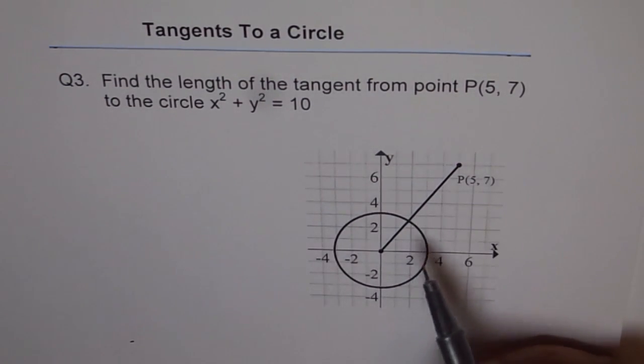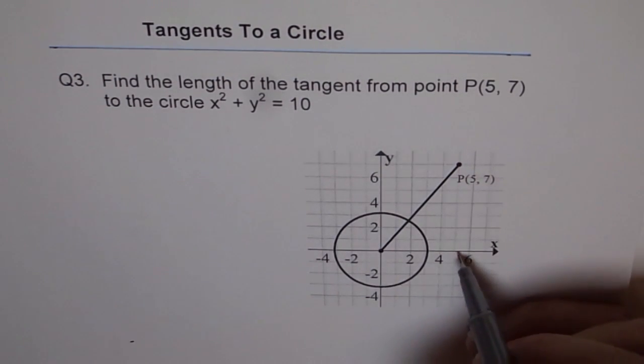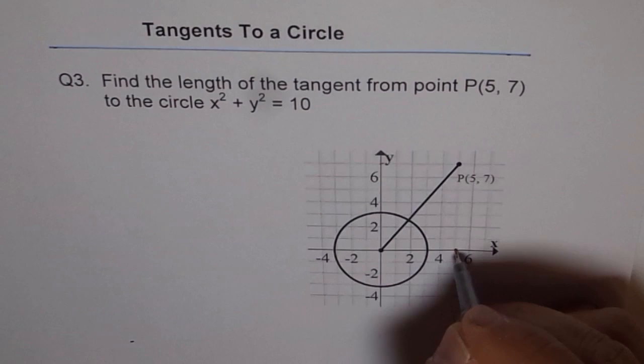And what do we need to do? We need to find the length of tangent from this given point P which is (5,7). That means from here you go 5 units and then 7 units up. So this is 7 and this is 5.